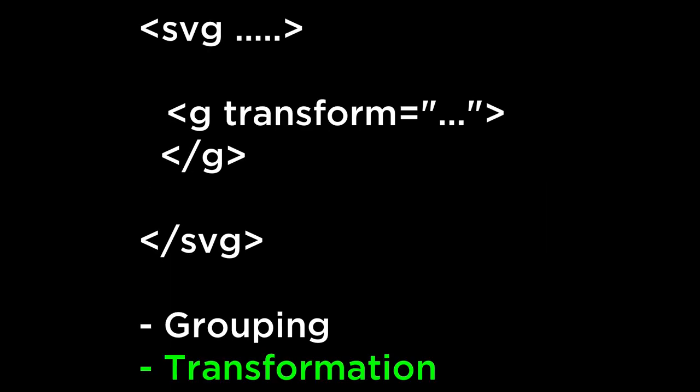This is useful when defining the look and feel in CSS, because we can apply an HTML class and/or HTML ID to a group element, which is then applied to all contained SVG elements. The other thing you can do to a group element is apply a set of transformations. This transformation will affect every element inside of the G group.